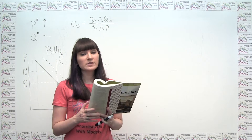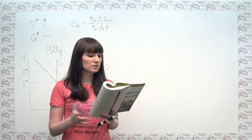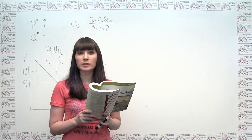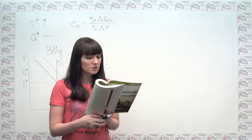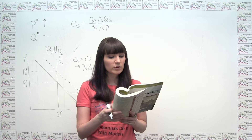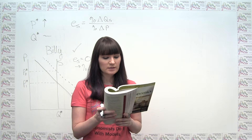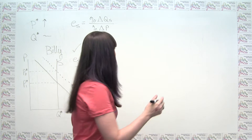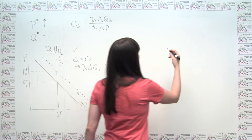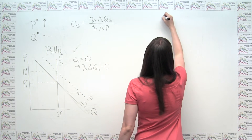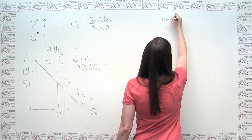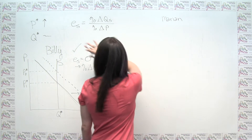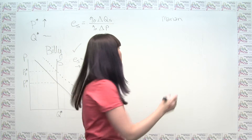Next up, we have Marion, who has a different hypothesis: supply increased, but so did demand. We'll draw a graph for her and see whether this can be made consistent with the scenario we're looking for.